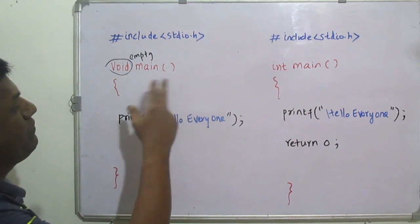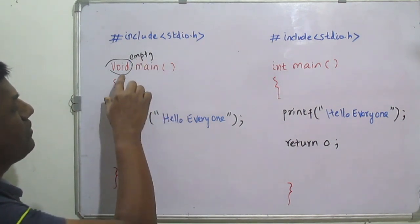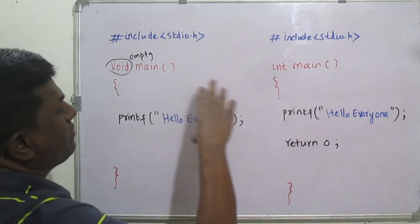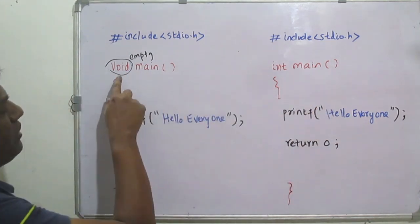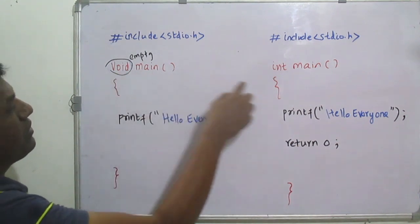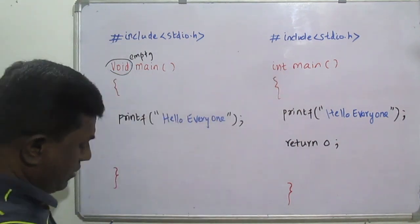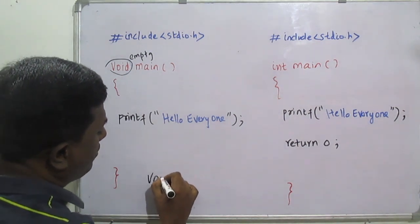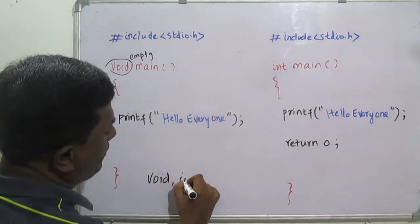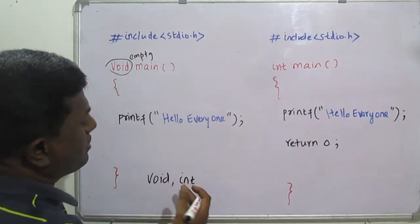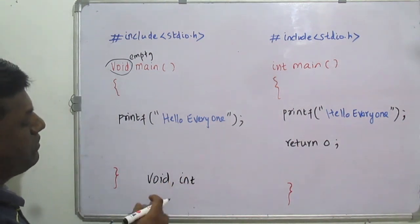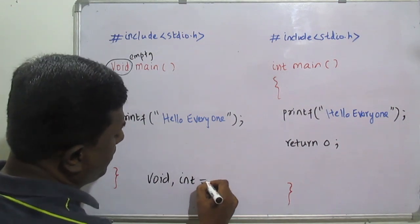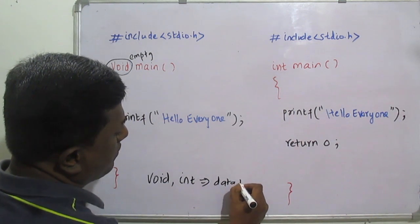We have these two options in the program — why? Because it is the main function. In both cases it is a main function, but in some cases we use void and in some cases we use int. First of all, we have to understand that both void and int are data types. Void is a data type and int is also a data type.